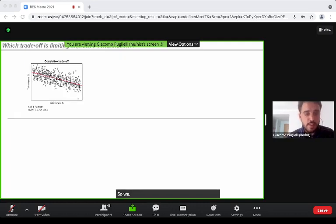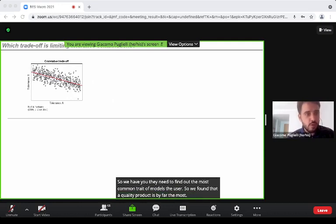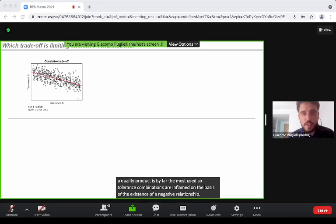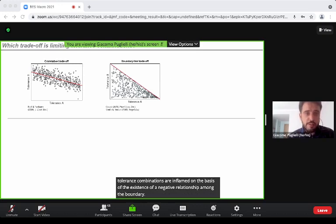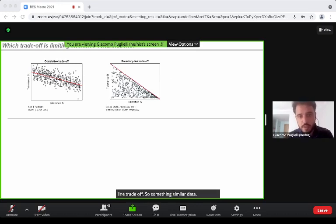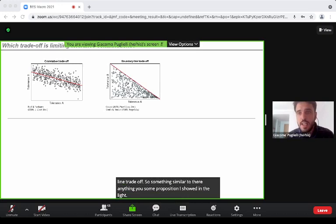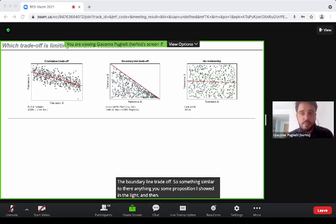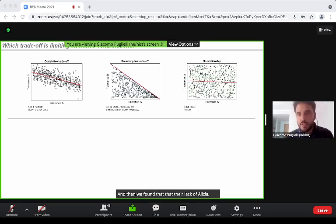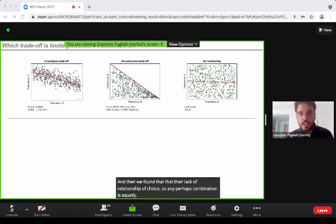We reviewed the literature to find out the most common trade-off models used. We found that the correlative trade-off is by far the most used—tolerance combinations are inferred on the basis of the existence of a negative relationship among tolerances. The boundary line trade-off, something similar to the Smith and Huston proposition I showed in the first slide. And then the lack of relationship approach, where any tolerance combination is equally likely.